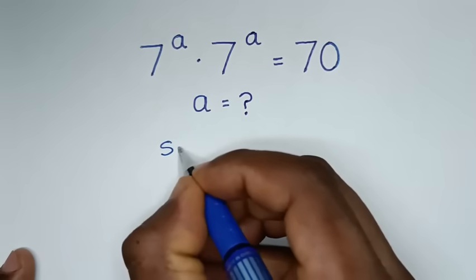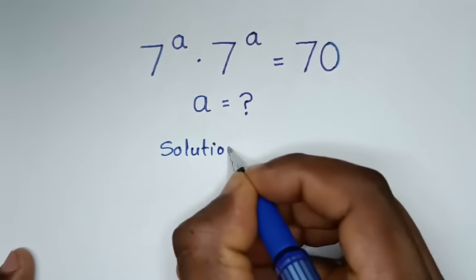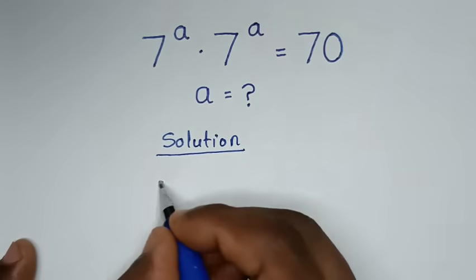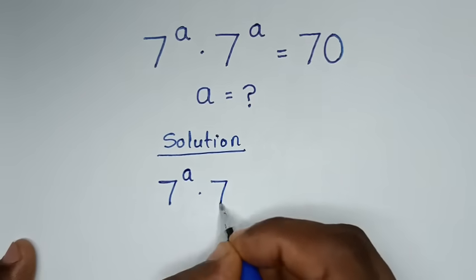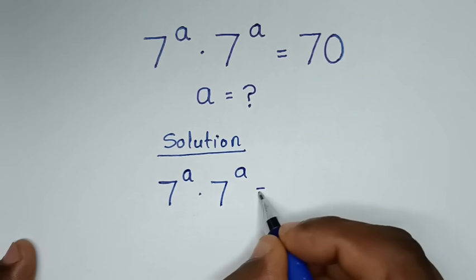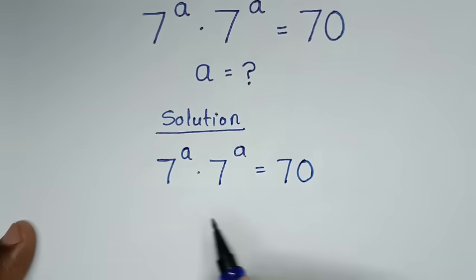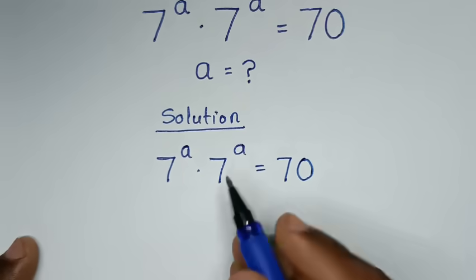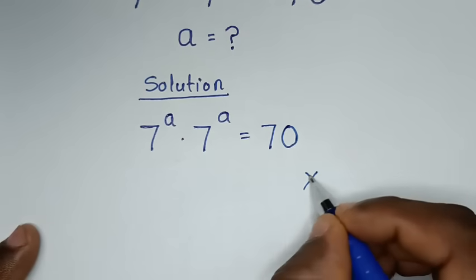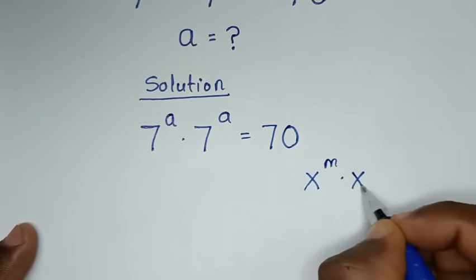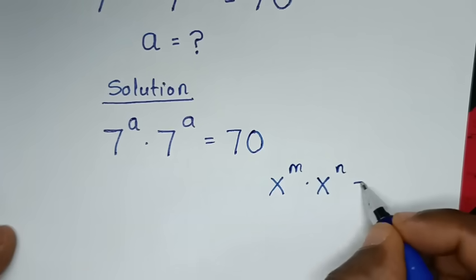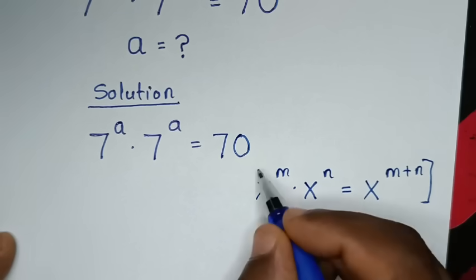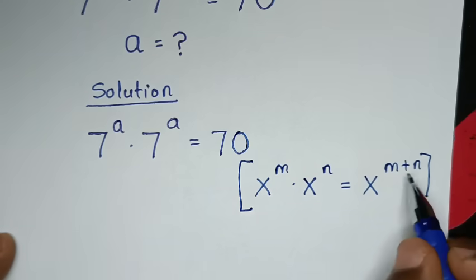Now, solution. From this problem, which is 7^A times 7^A equals 70, this part here is in the form of the rule x power of M times x power of N, which is equal to x power of M plus N. We will apply this form here.